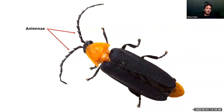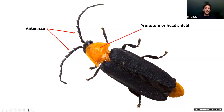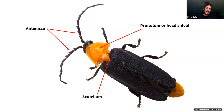Each firefly has two antennae used sometimes for chemical communication — when antennae are elaborate, they're used for finding mating partners rather than light organs. This is the pronotum, or head shield, which can sometimes be a good identification character and sometimes has markings on it. This is the scutellum, derived from the thorax — a little triangle- or shield-shaped structure at the beginning of the elytra, between them. Its shape is sometimes a good character to identify fireflies.